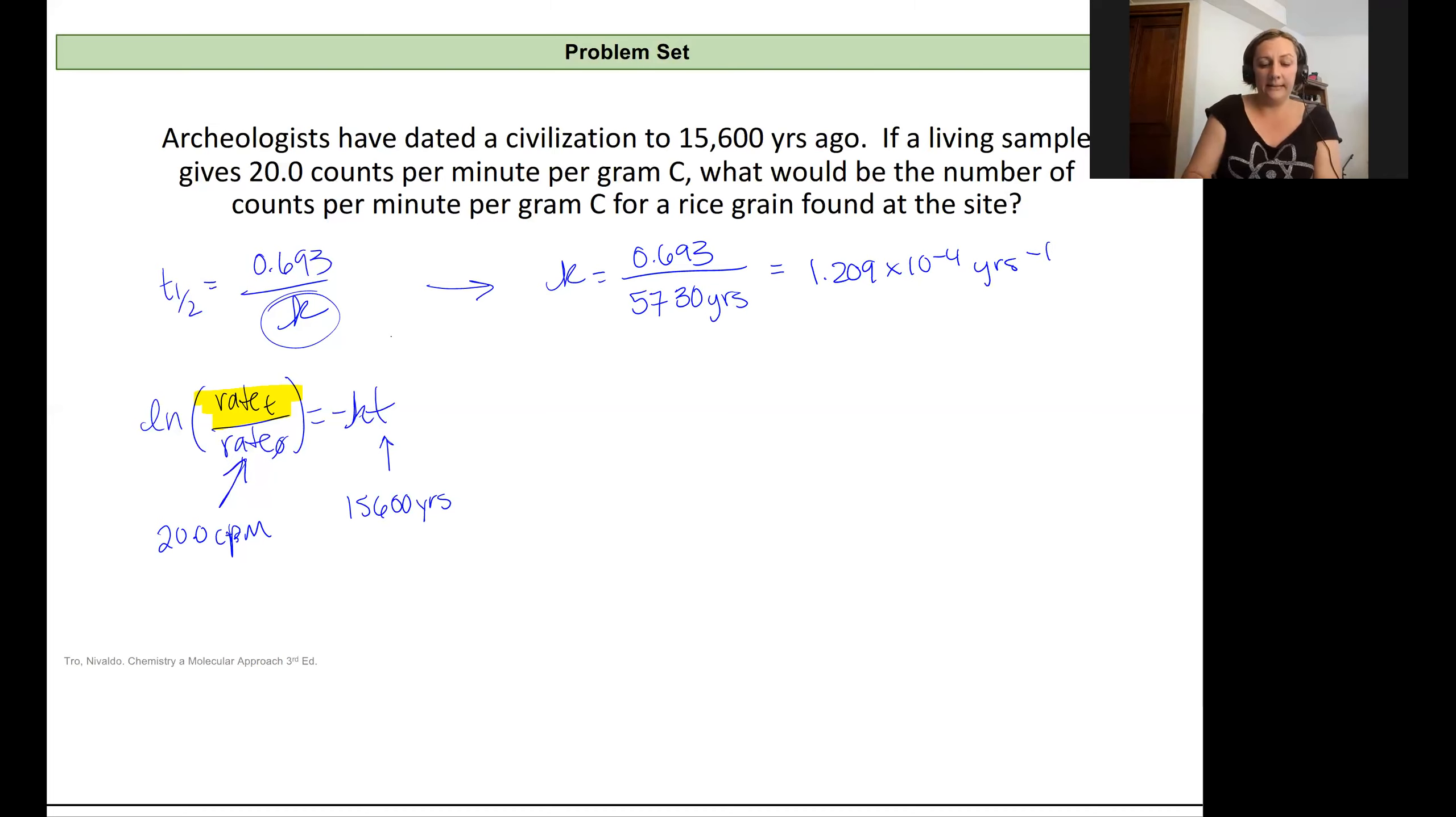And I can now plug that into my equation and solve for the rate T. So that rate, that counts per minute, will be equal to my initial rate times E to the negative KT.